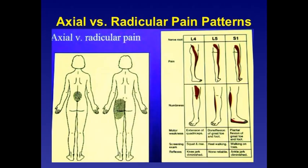Axial versus radicular pain patterns: axial pain is typically located in the center of the lumbar spine with some referral toward the sacrum, while radicular pain is referred into the body area down the lower extremity. For the L4 nerve root, patients typically feel pain in the lateral thigh toward the knee, whereas numbness is felt mostly on the middle portion of the knee. Motor weakness is evident by examining extension of the quadriceps; the screening exam is squatting, and the knee jerk reflex is usually diminished.